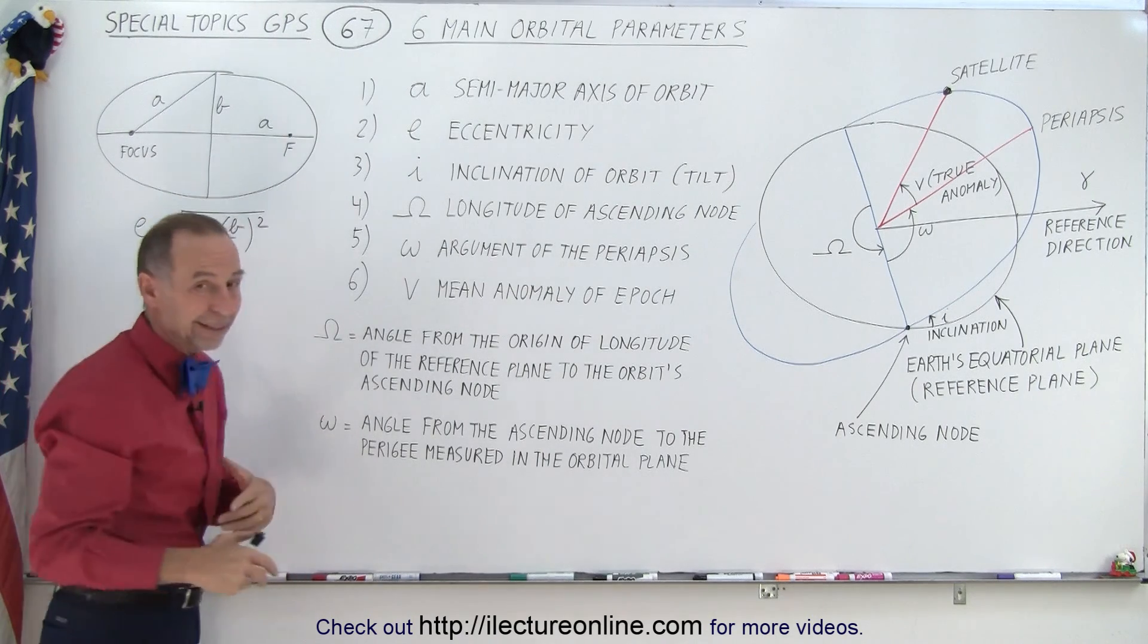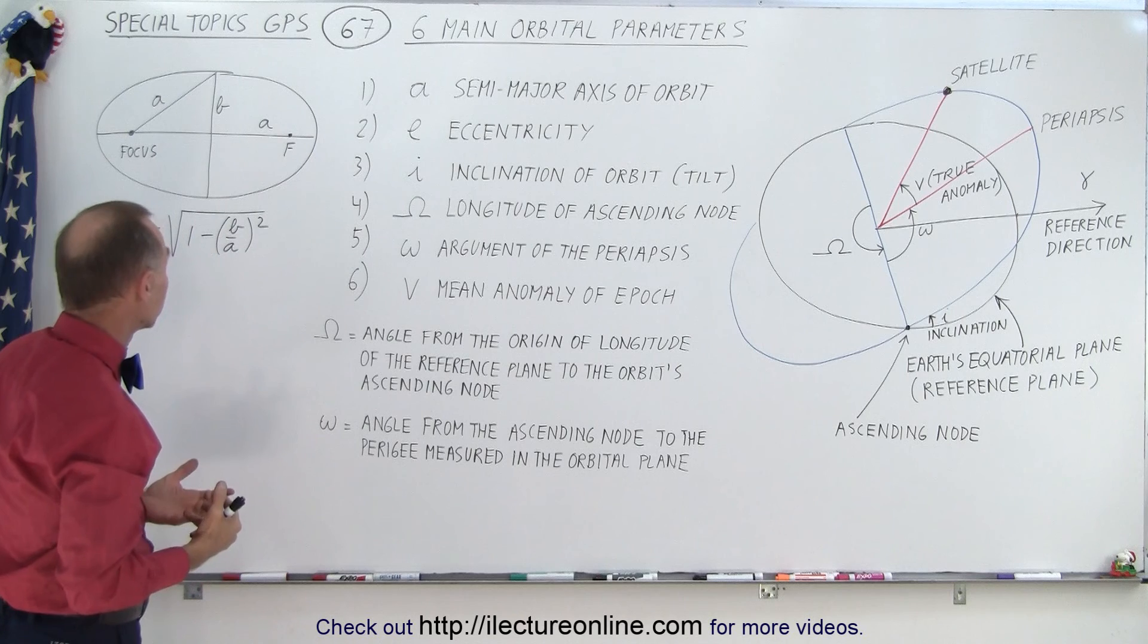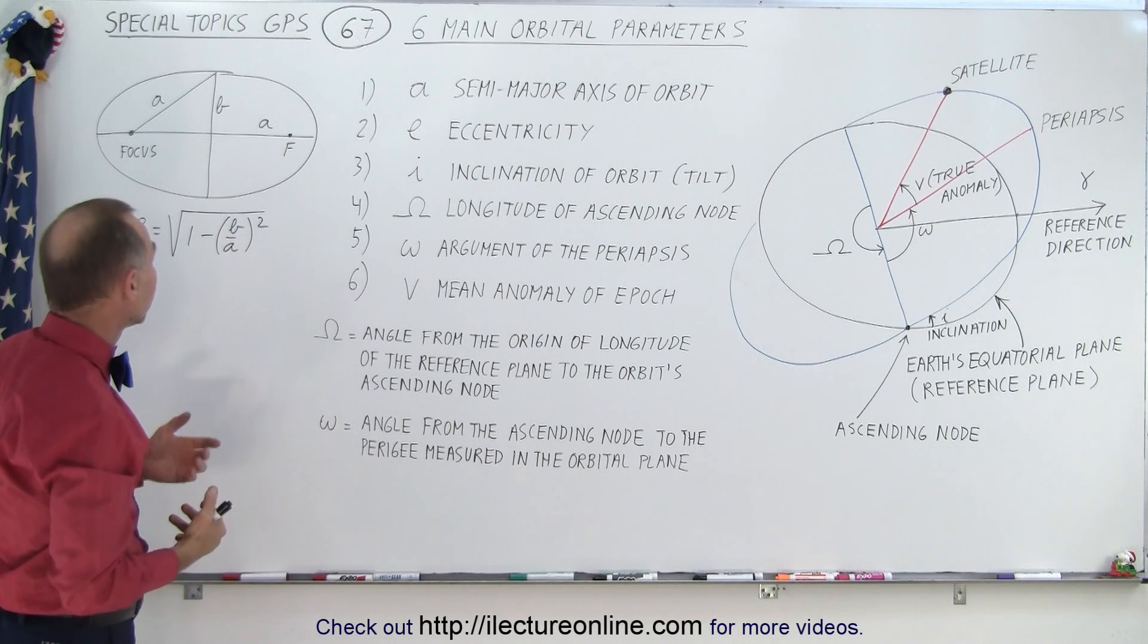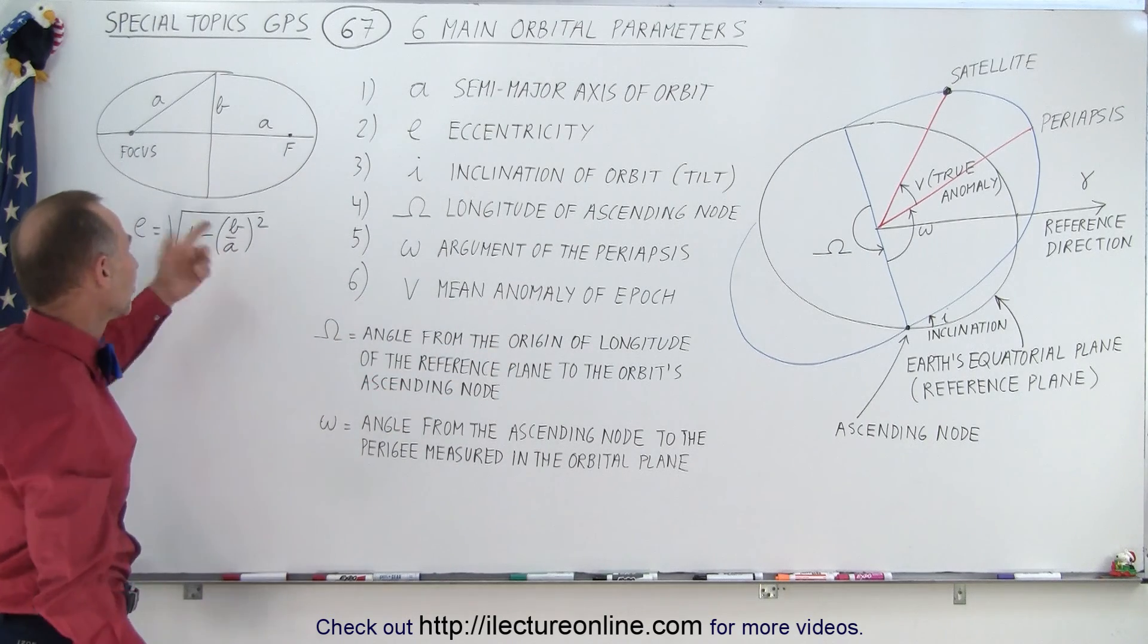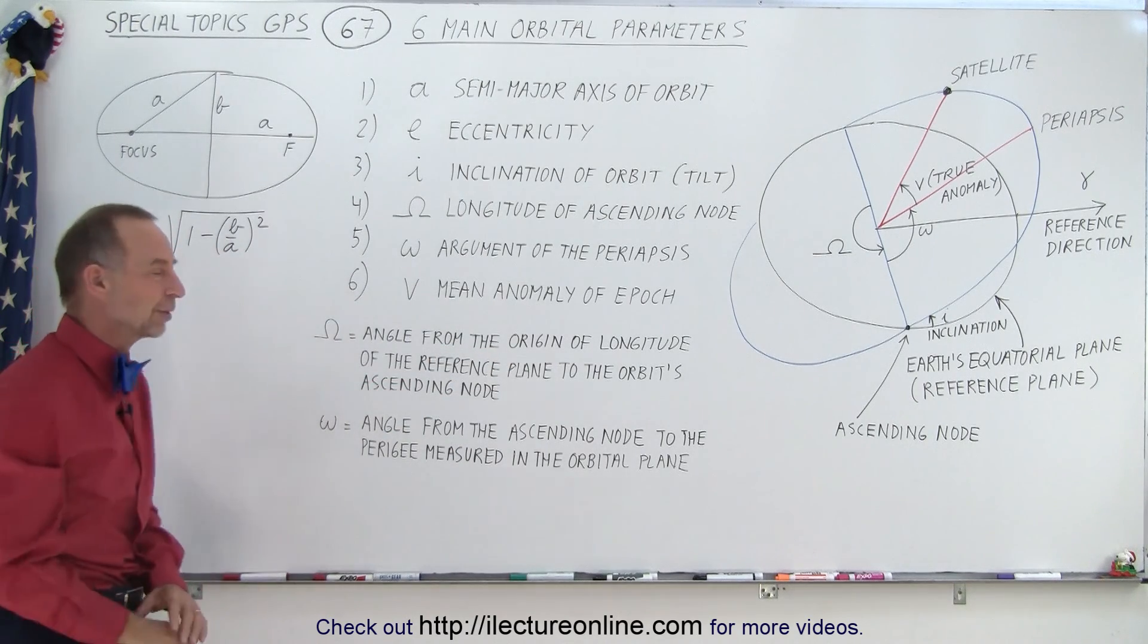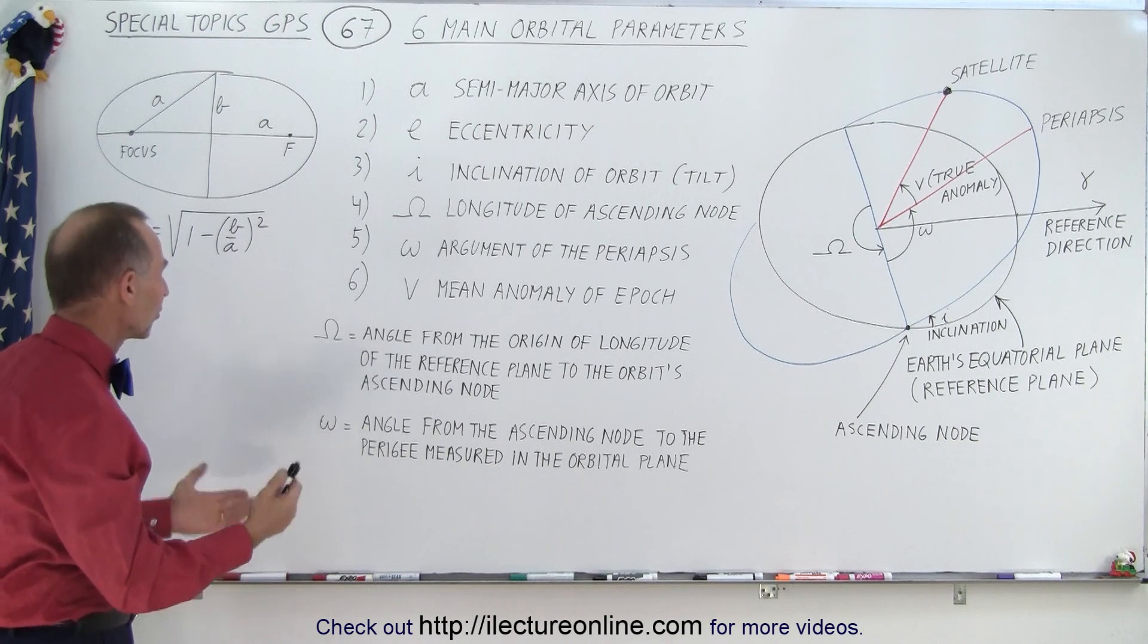If this is equal to zero, then it's a circle. If it's equal to one, then of course it is essentially a straight line, because then B is zero and A is infinite with respect to B. So it ranges from zero to one.